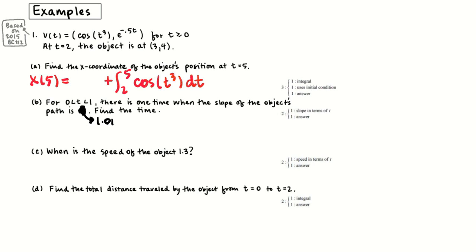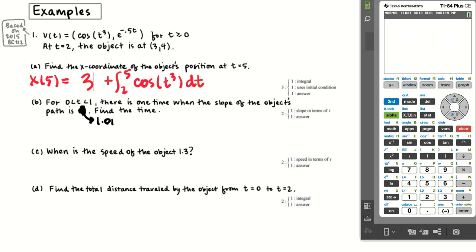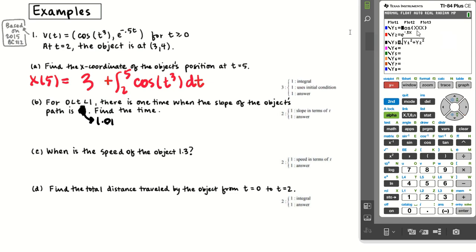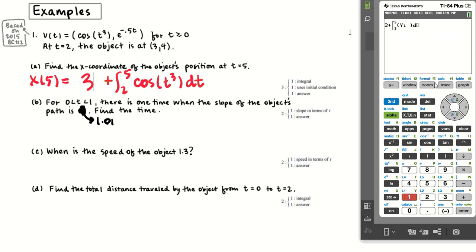This is a calculator-allowed problem — BC number 2, so the first two free-response questions allow a calculator. x(2) equals 3. We bring in the calculator and say 3 plus the integral (math 9) from 2 to 5 of cosine of t³. I'd recommend plugging cosine of t³ into y1 and e^(−0.5t) into y2, since we'll use them repeatedly. Calling y1 for dx/dt, we integrate and get approximately 2.909.